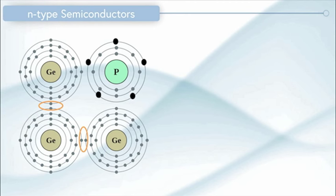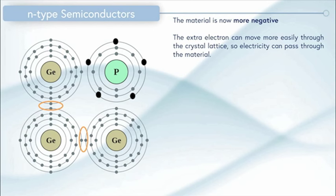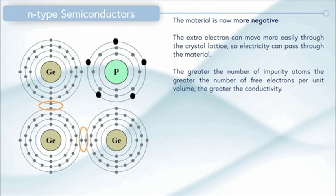This means that overall the material is now more negative because there's that extra electron. The extra electron, which is called a free electron, can move more easily through the crystal lattice so electricity can pass through the material. Remember that electricity is the movement of electrons through a material. The greater the number of impurity atoms, the greater the number of free electrons per unit volume, the greater the conductivity. This essentially means that if we add more of a dopant material, the material will conduct more electricity.